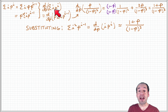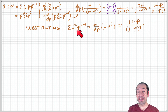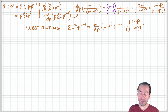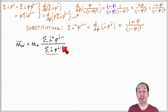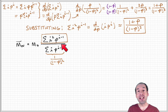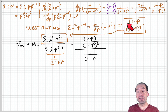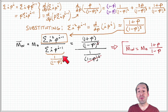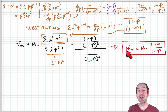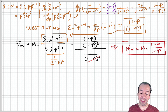So now we know that the derivative of the sum of i·p^i equals the sum of i²p^(i-1), which gives us (1+p)/(1-p)³. Substituting (1+p)/(1-p)³ in the numerator and 1/(1-p)² in the denominator and simplifying, we obtain an expression for the weight average molecular weight equal to the monomer molecular weight times (1+p)/(1-p).